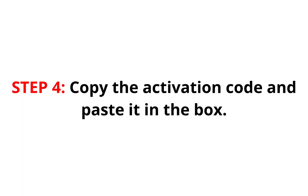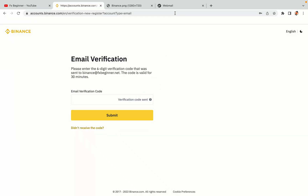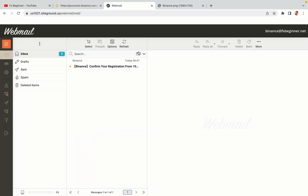Step 4: A confirmation code will be sent to your mail. Open your mail inbox, copy the code and paste it in the box to fully activate your Binance trading account.